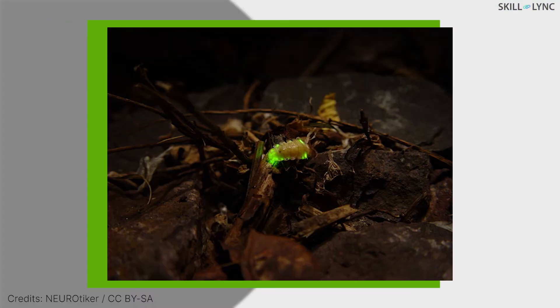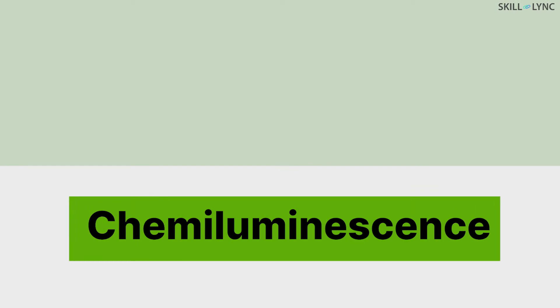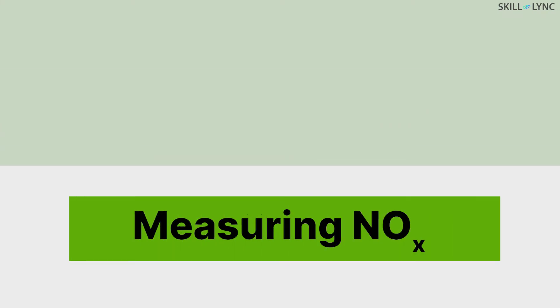Fireflies have a certain light-emitting pigment. These pigments emit light after a few chemical reactions. Are you wondering why we're talking about fireflies now? The phenomenon by which light is emitted due to chemical reactions is attributed to a property known as chemiluminescence. This is the principle used for measuring the emissions of NOx in the exhaust.